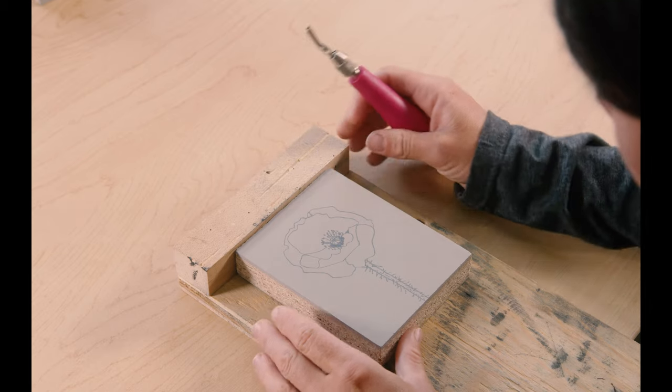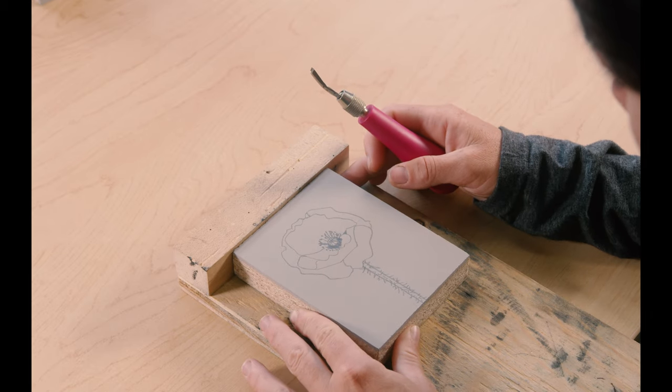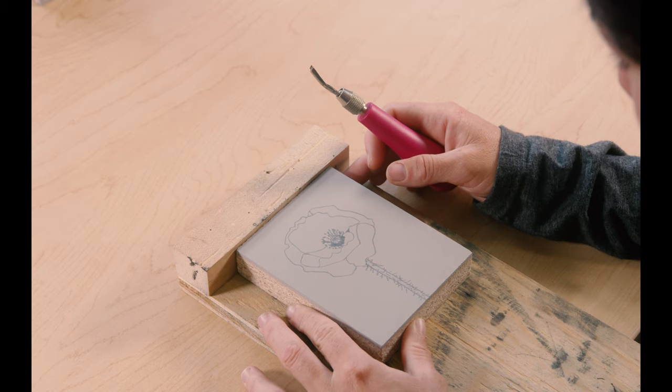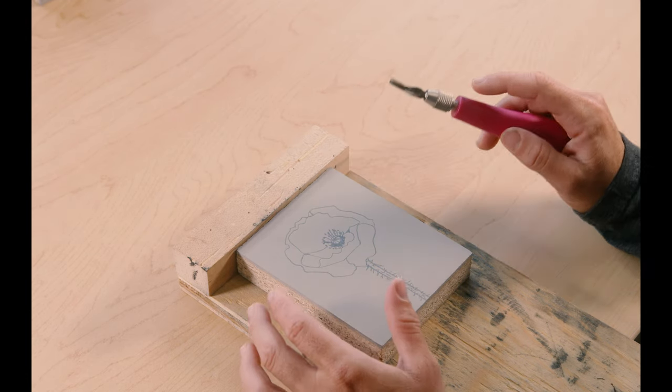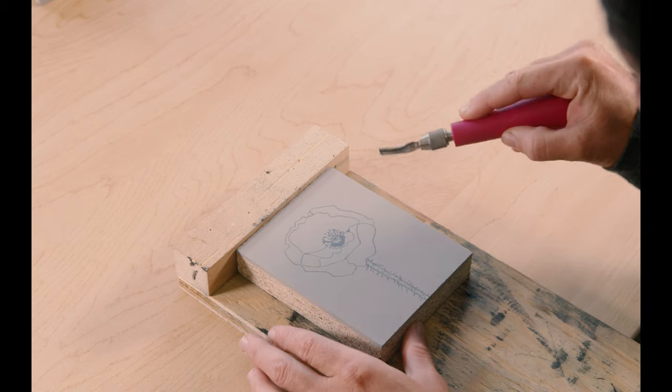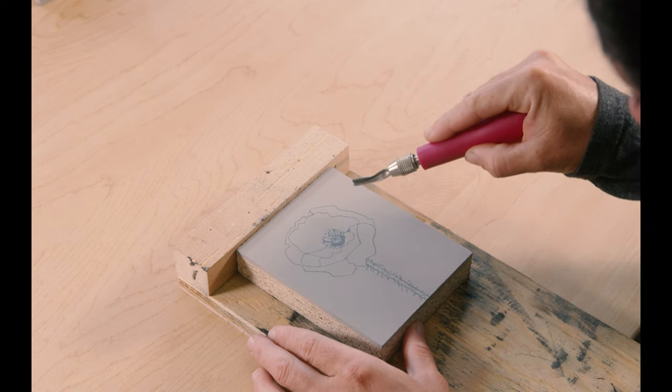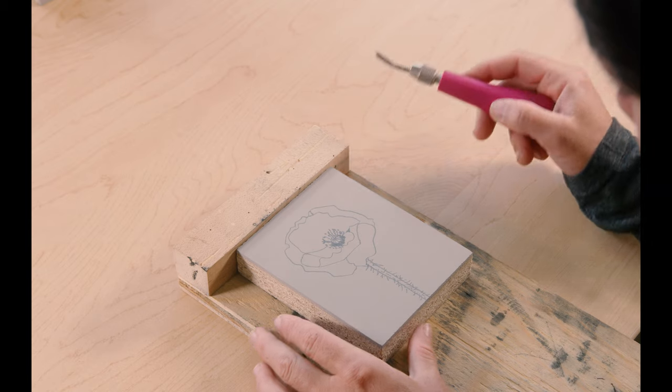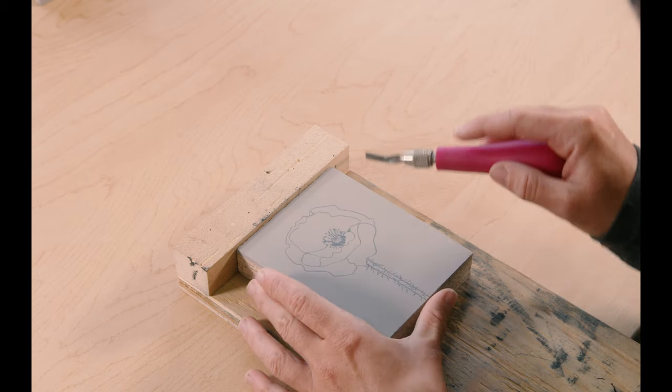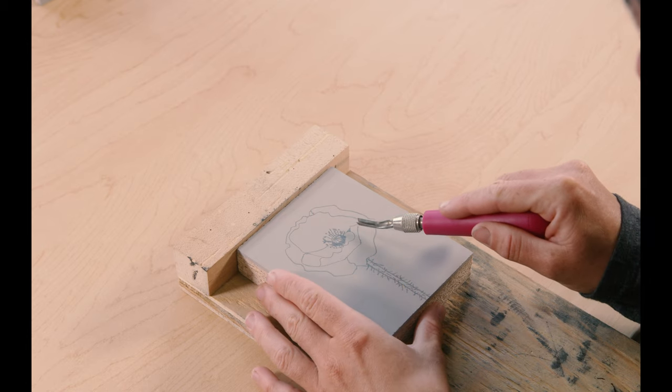So, the bench hook will keep your work surface from slipping around, and it'll make it harder to cut yourself. And it's very easy to cut yourself when you're carving linoleum because you have to put some force into the tool. So, just make sure your hand is never on the other side of the carving tool. Make sure you are always carving away from yourself.